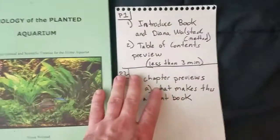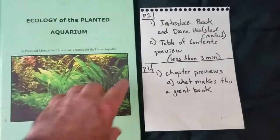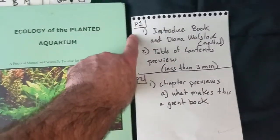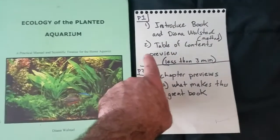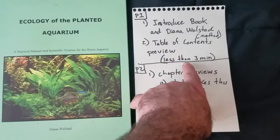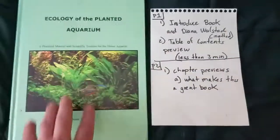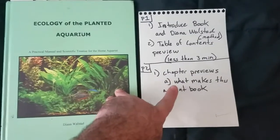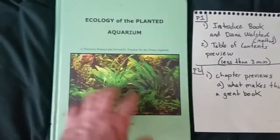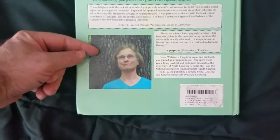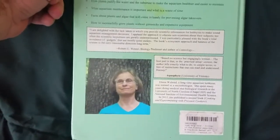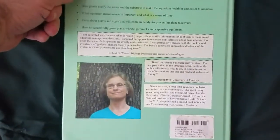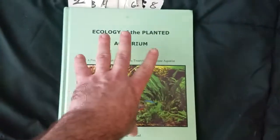So this video is going to be in two parts within one video, not two separate videos. Part one, I'm going to introduce you to the book and Diana Walstad, and briefly go over the table of contents — that should be less than three minutes. Part two, I'm going to give you chapter previews and talk about what makes the book great. So this is the cover and this is the back. That's Diana Walstad herself. She is an ecologist and a hobbyist of aquariums, and she is the founder and creator of the Walstad Method. This book is not about the Walstad Method — it's about ecology and planted aquariums.